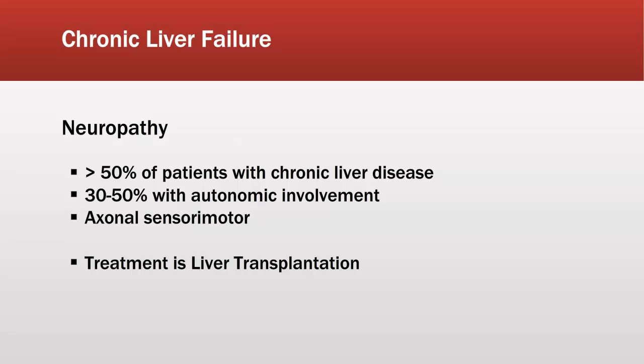Unlike the myelopathy, neuropathy associated with chronic liver failure is actually common — at least 50% of people with chronic liver disease show evidence of peripheral neuropathy. This is independent of the underlying cause of liver failure, so it should not be attributed solely to alcoholism or nutritional deficiencies. It's very common for 30–50% of people with chronic hepatic insufficiency to develop autonomic nervous system involvement as well. The neuropathy is a typical axonal sensorimotor type, similar to that seen in diabetes, and again the only known treatment is liver transplantation.